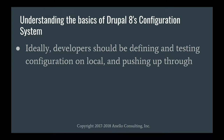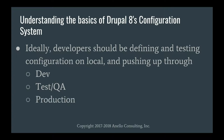Ideally as a developer, you want to be working on your local machine. You never want to be making changes directly on production. From a best practice standpoint, you should not be making any configuration changes on any environment other than local. You should make changes on local and push up through dev, through your Git branch environments, your test environments, your QA environments, and onto production.